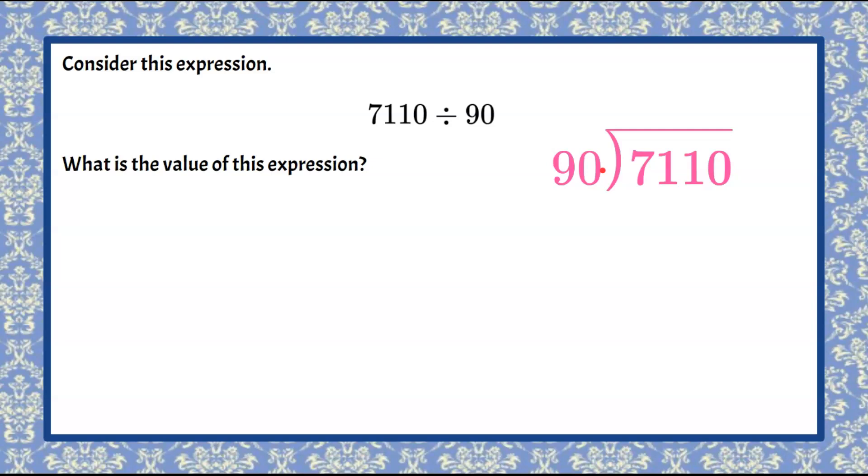Students often say to me, which one goes on the inside and which one goes on the outside? Think about it as it's written. We're taking 7,110 and then we're going to divide that by 90. If you read it as it's written, then it's easier to set up. 7,110 divided by 90.